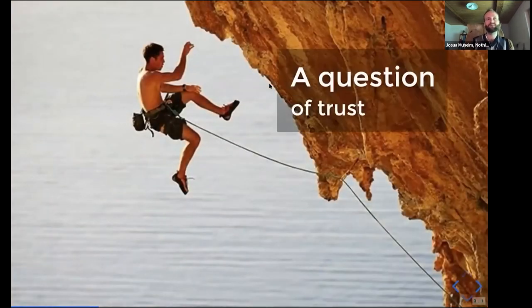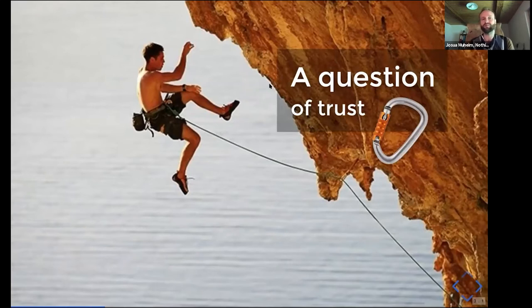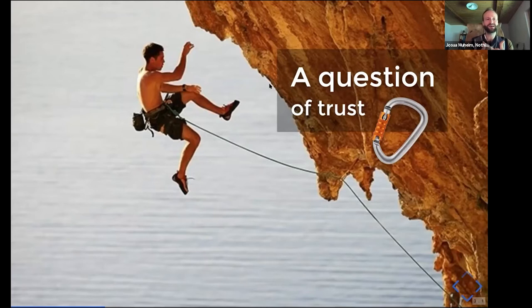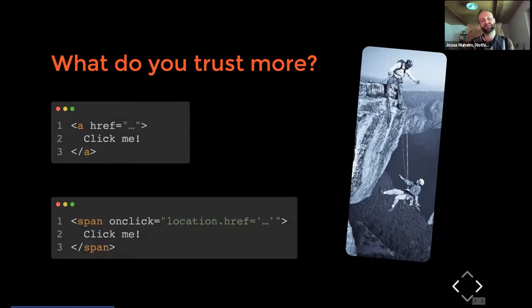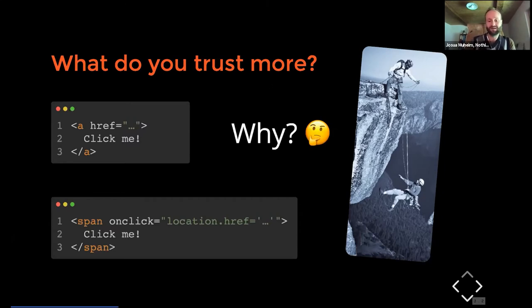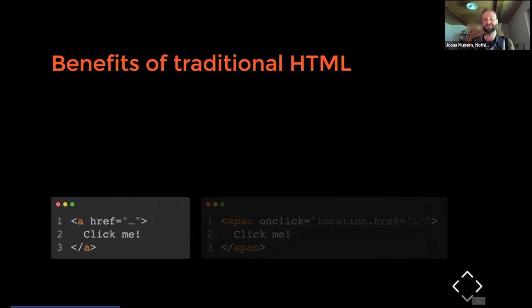Let's start with a simple question of trust. A climber heavily trusts in the reliability of his rope and carabiner linking him safely to the rock face. In a highly complex and interconnected world, we need structures and values we can rely on. Web design is becoming more and more powerful and there are often many ways to reach a goal. Regarding a link: what do you trust more — a link implemented using an anchor tag with an href attribute, or one implemented using a span tag with an onclick attribute? I guess you all agree it would be the anchor tag — but why?